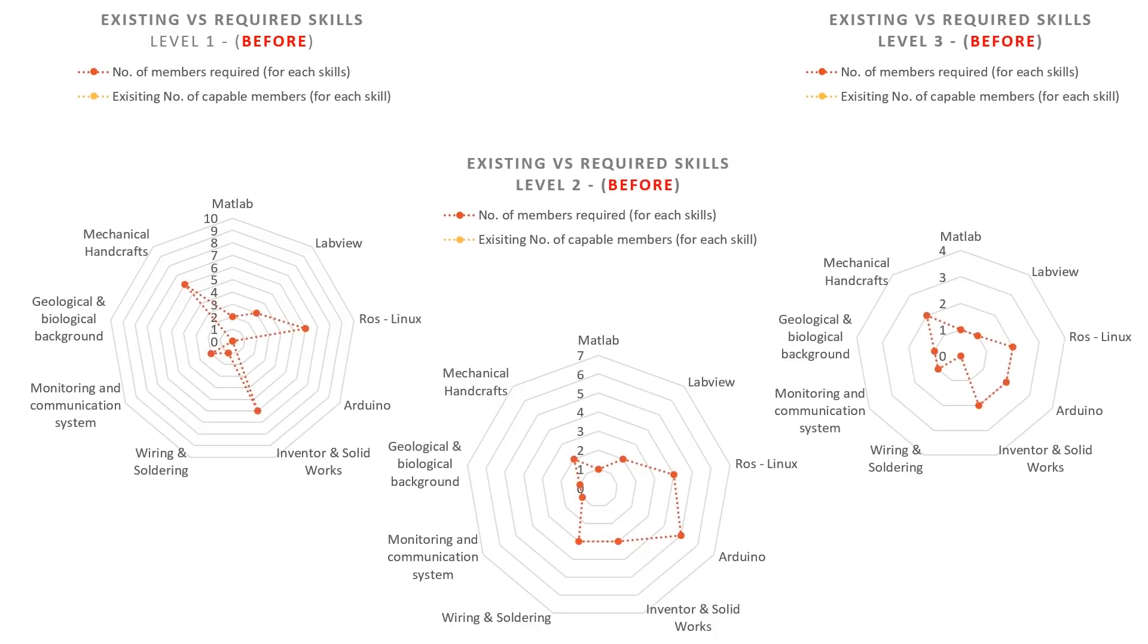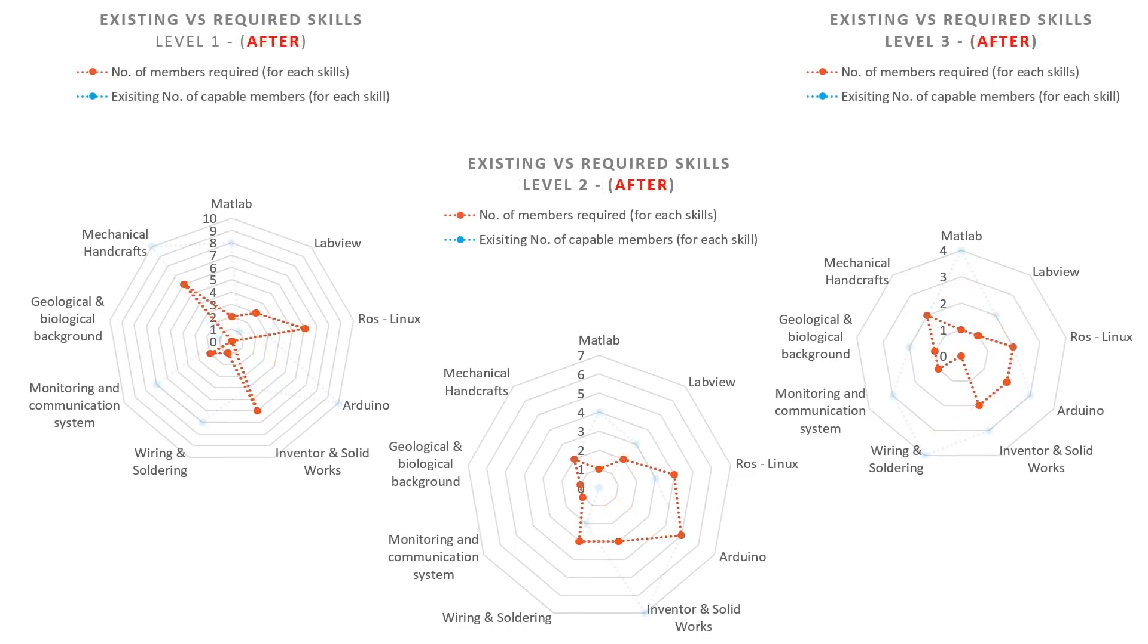In this summary, red shows the required number of members determined by the team leaders, yellow and blue show the number of members with that skill level.